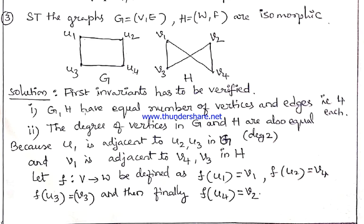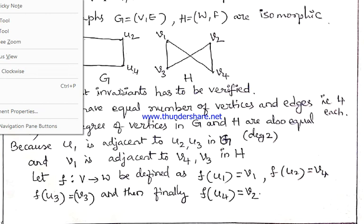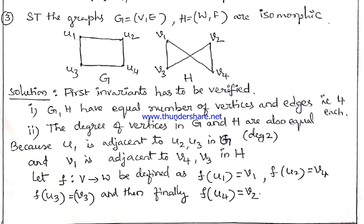Now let us try to define a function between the vertex sets which preserves the adjacency of vertices. In graph G, u1 is adjacent to u2 and u3, each having degree 2. In graph H, v1 is adjacent to v4 and v3, each having degree 3. With this observation, let us define the function as: f(u1) = v1, f(u2) = v4, and f(u3) = v3. One more vertex mapping remains, so we suppose f(u4) = v2.